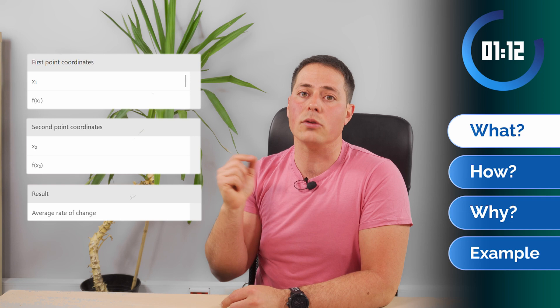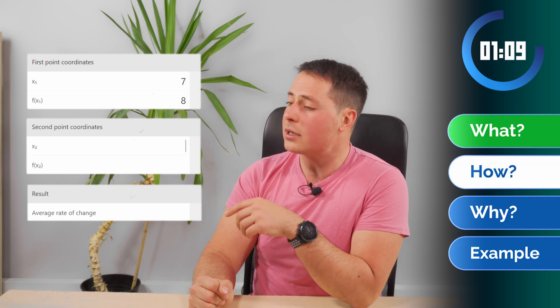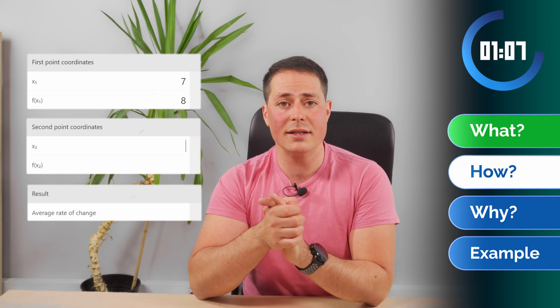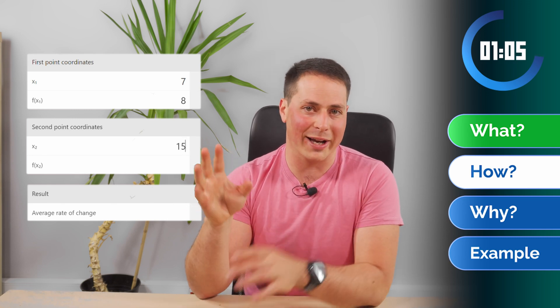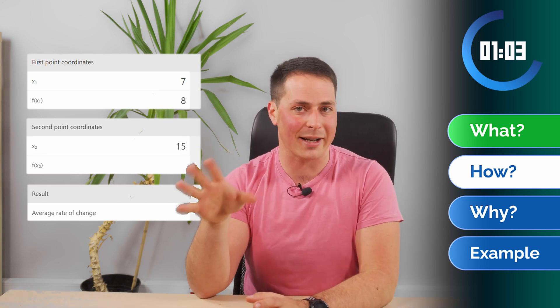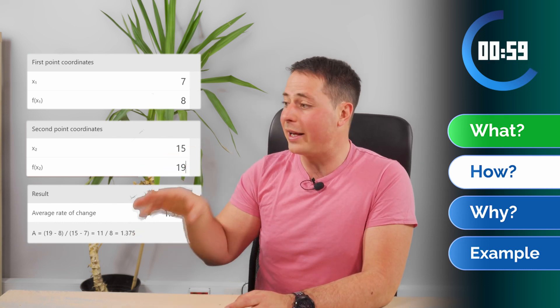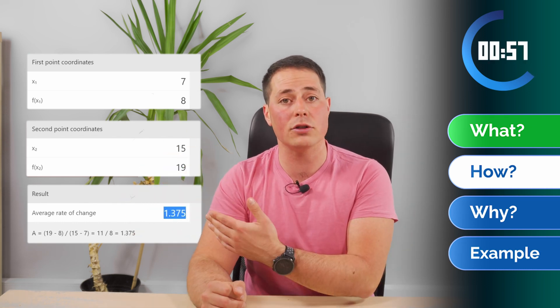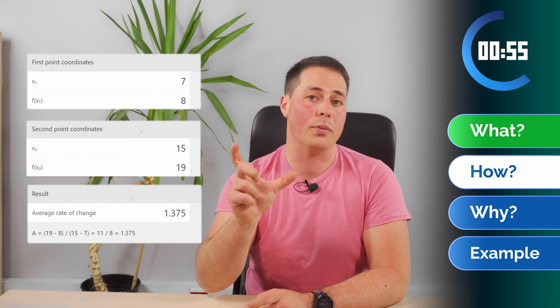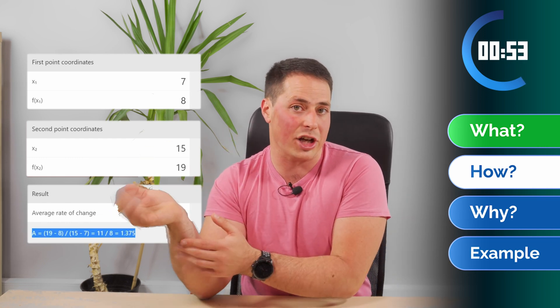First let's look at how to use this calculator. We need to define two points using two different coordinates, and some people might be getting flashbacks to the distance between two points calculator. It's very similar, but this gives you a different result. It gives you a step-by-step solution and tells you the slope between those two points, the average rate of change.